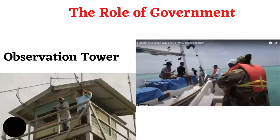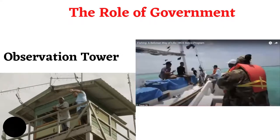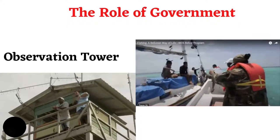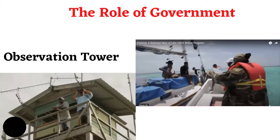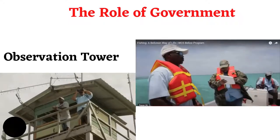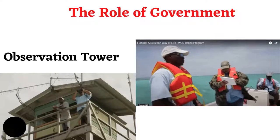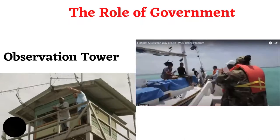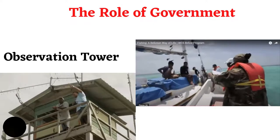Now onto the role of the government. The main role of the government is that of managing the fisheries resources. Management includes the designation of marine protected areas, protection of certain species, creating open and closed fishing seasons, designation of size limits, as well as designation of gear restrictions. The fisheries department uses an observation tower as well as drones to observe what is happening at sea. Patrolmen are also dispatched to check on fishermen to ensure that they are licensed and are following the rules and regulations.